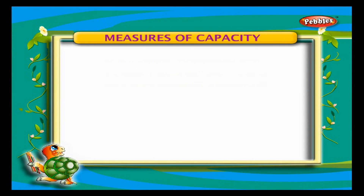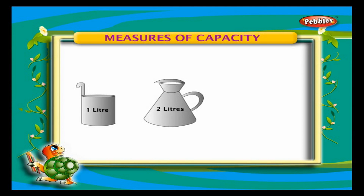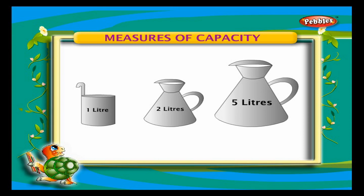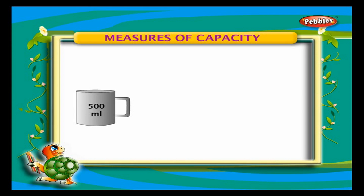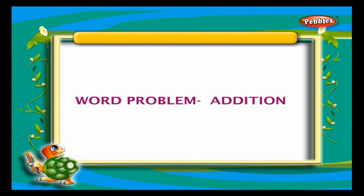Measures of capacity: Liquids like milk, oil, and water are measured in liters. Liter is the unit of liquids. Large quantities are measured in liters and small quantities in milliliters. Measure cups are generally in 1 liter, 2 liters, and 5 liters for large quantities. Small measure cups come in 500 ml, 200 ml, 100 ml, and 50 ml.